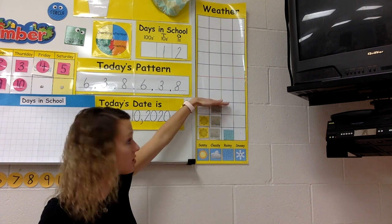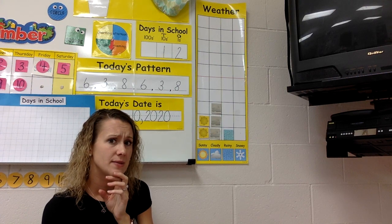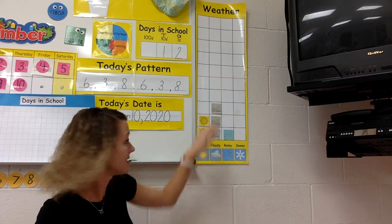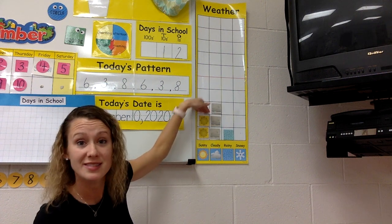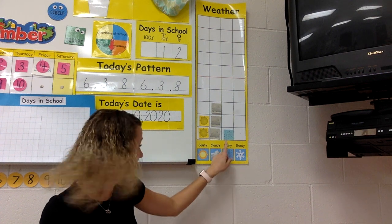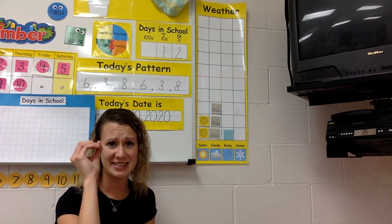Cloudy is one, two, three — that's the tallest one. Who has the second most? The next tallest — sunny. Sunny has the next tallest. And who has the third tallest? And who has the least, who's losing? Snowy — because snowy has zero. Say: bummer, dude.